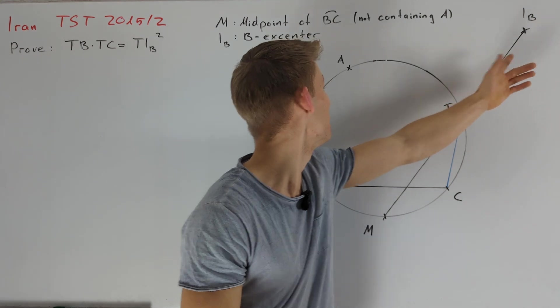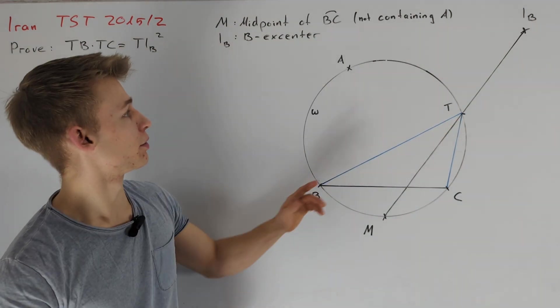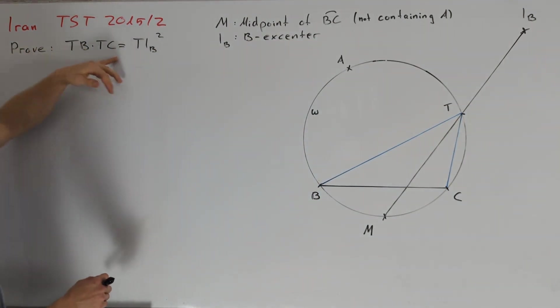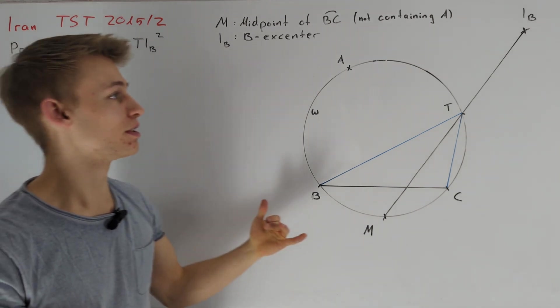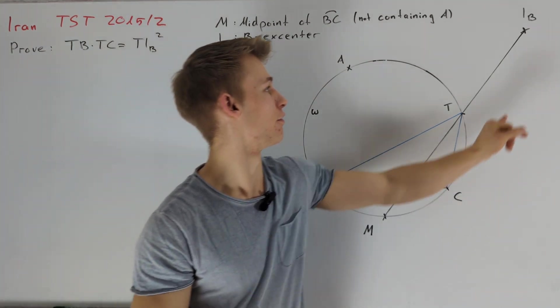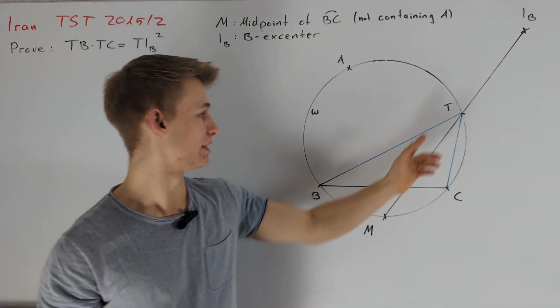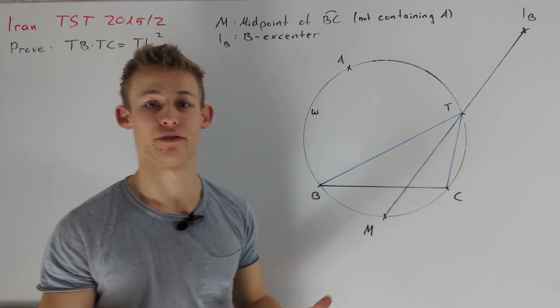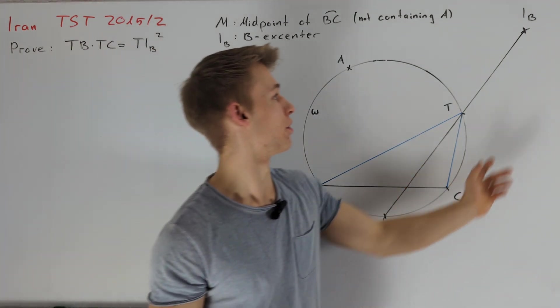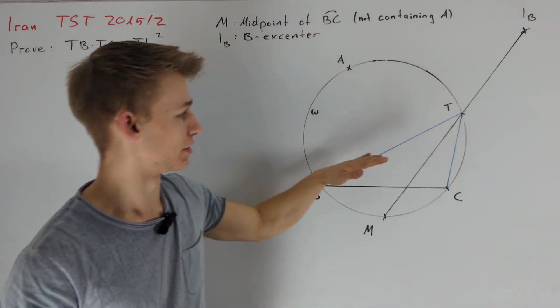So, to construct IB, we need point A. But since we don't need A for what we want to prove, our goal is to find another property of IB that does not depend on our point A. Then we can use the triangle TBC as our reference triangle and define the point IB only in terms of this triangle.